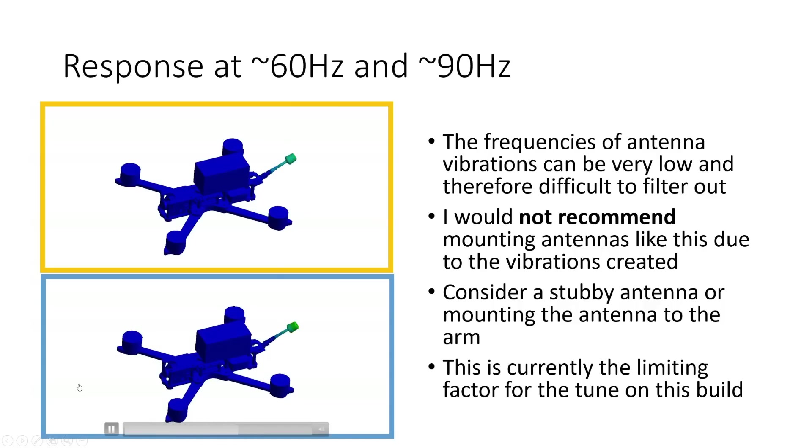If we look at the second mode, we can see that this mode has the antenna waggling from the left to the right. So the TPU mount is obviously a little bit stiffer in the left-right direction than it is in the up-down direction. And that means that we get two modes at slightly different frequencies. But both of those modes are creating a significant amount of vibration that's making it through to the gyro in the flight controller.